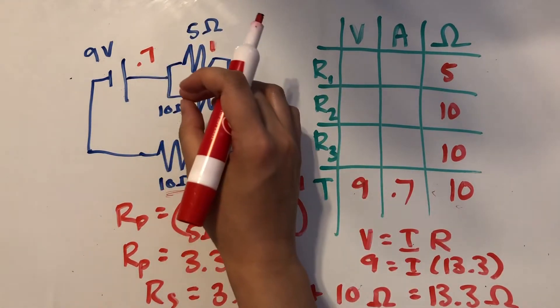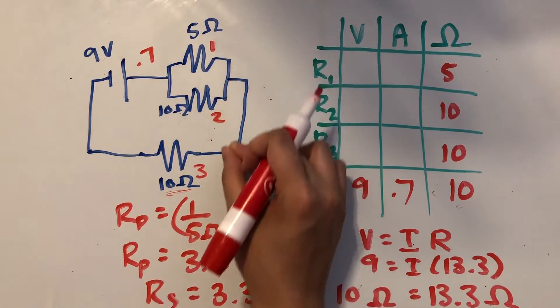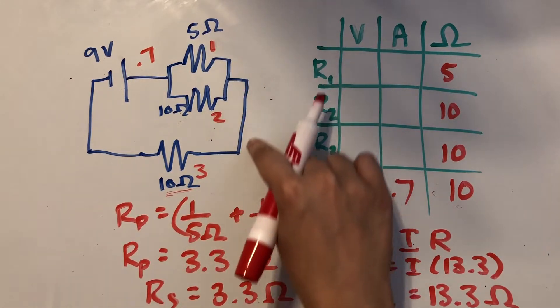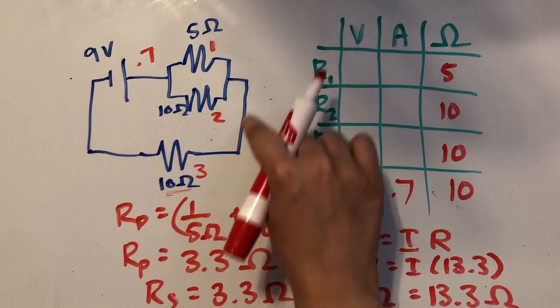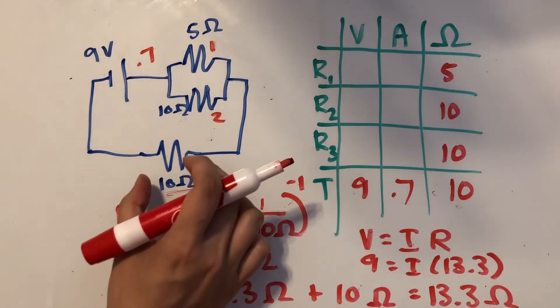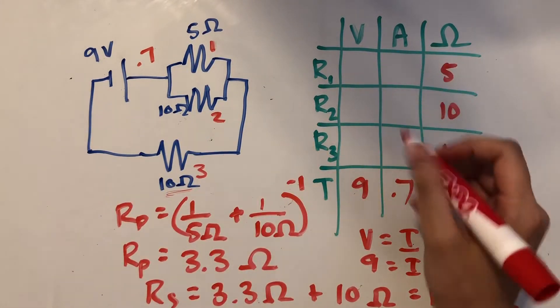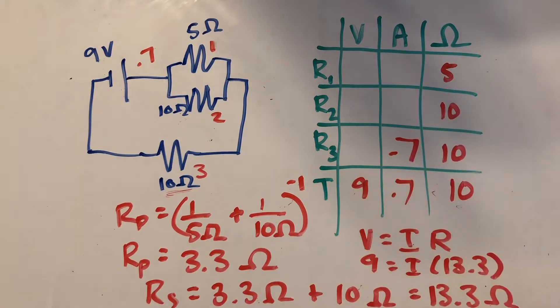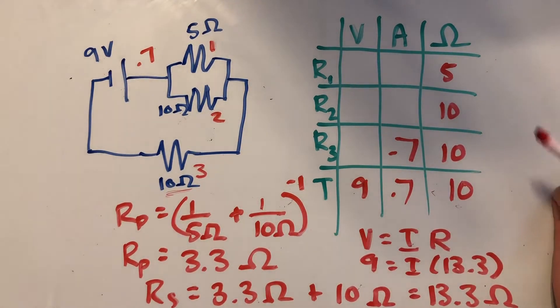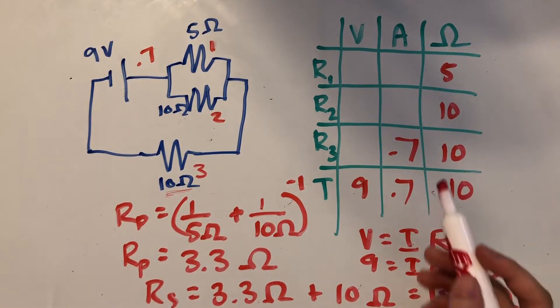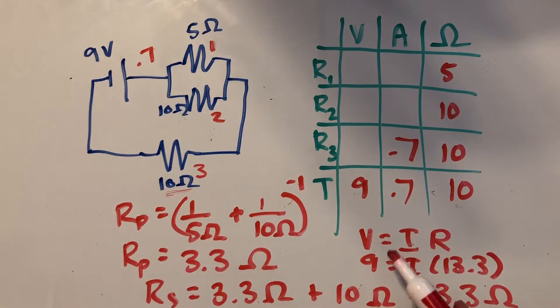And since the current going into the junction has to equal the current coming out, then that means the current running through this wire should also be 0.7. So the current here is also going to be 0.7 amps. So I see here that we've got another case where we know two of the values in the same row. So we can just use Ohm's law again to find the voltage.